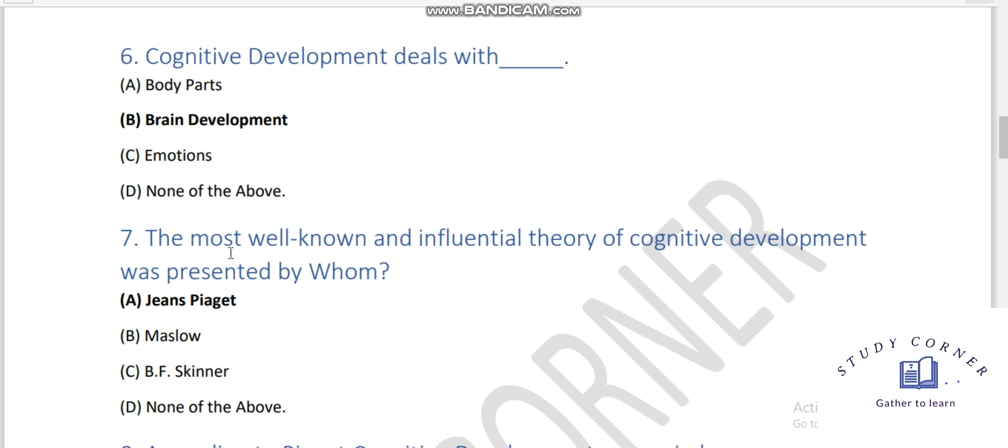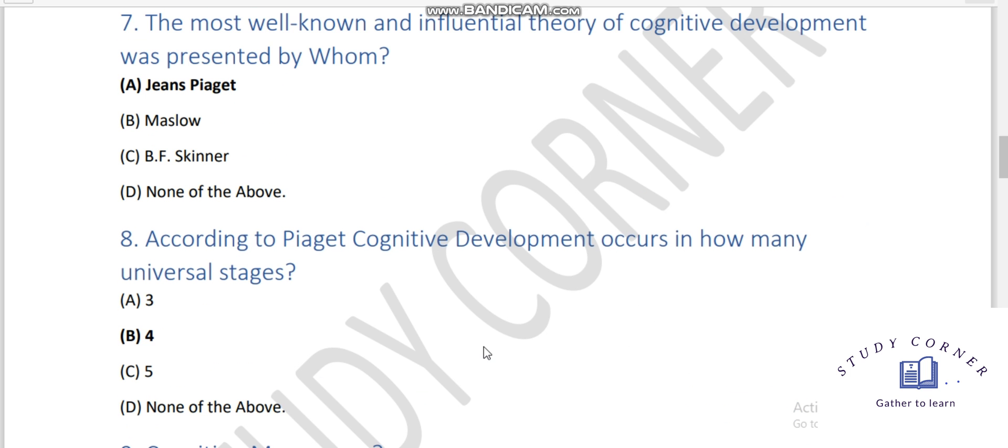The most well-known and influential theory of cognitive development was presented by whom? According to Piaget, cognitive development occurs in how many universal stages?